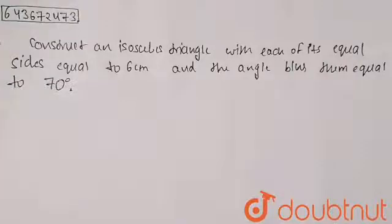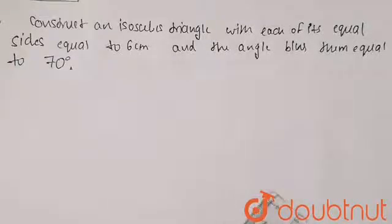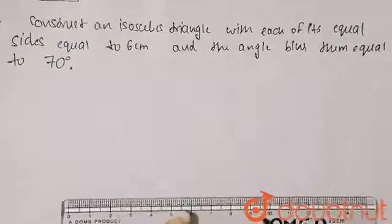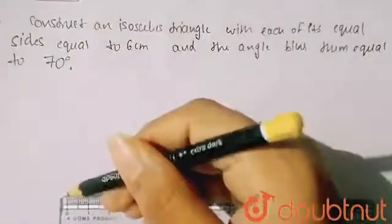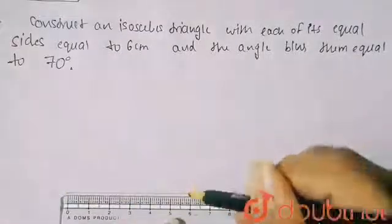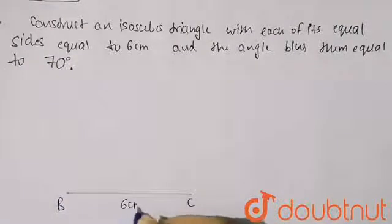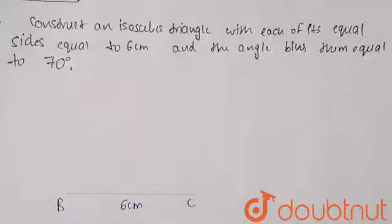My BC of six centimeters I have to draw. So this is my BC of six centimeters. Now I have to draw the angle 70 degrees.